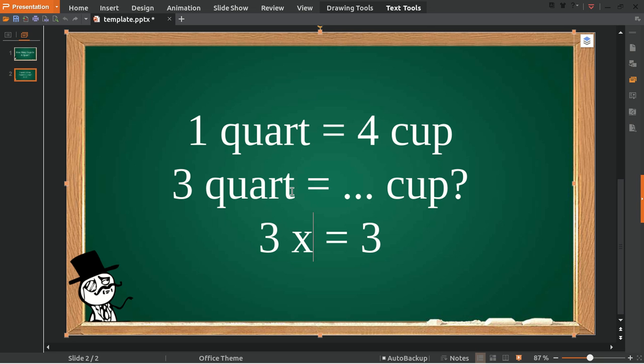Which is one quart, because three quarts is equal to three multiplying one quart. And then for cups, because we already put three in it, we need to multiply it with four.